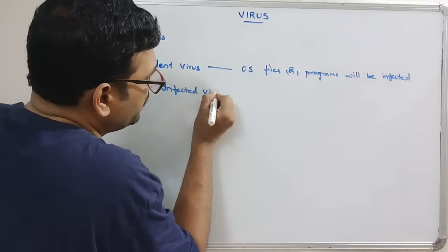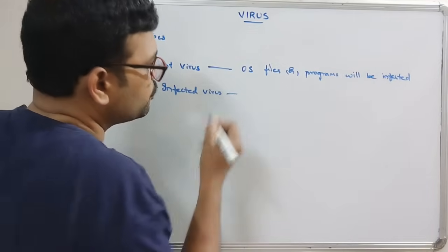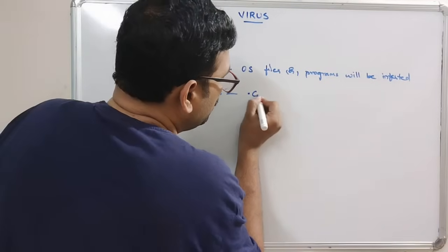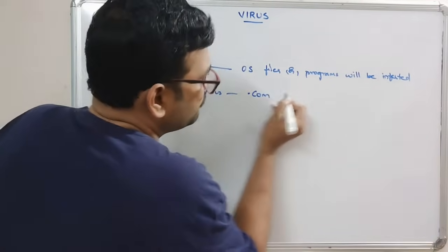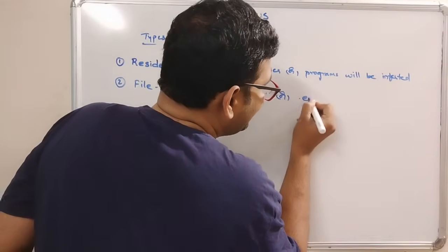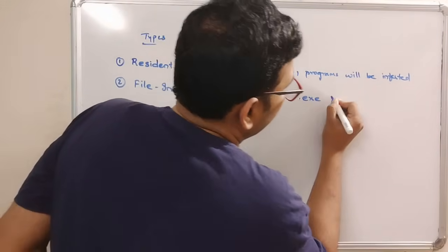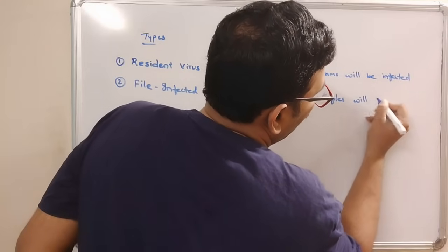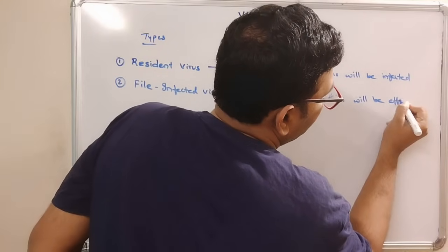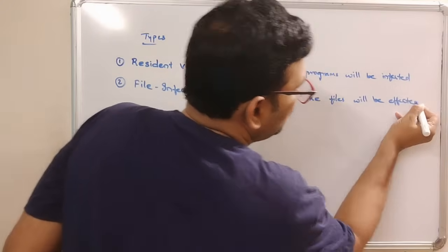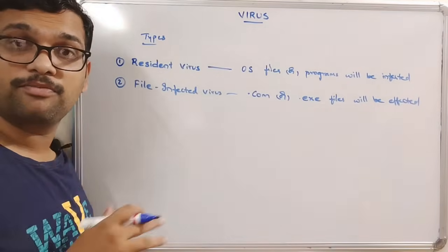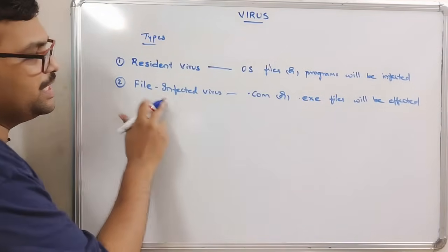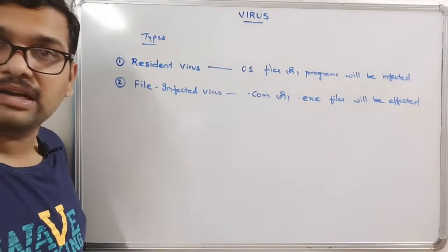The next type is the file-infected virus. With this virus, .com files or .exe files will be affected — so all executable files and .com files will be infected by this file-infected virus.